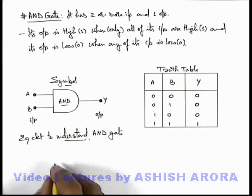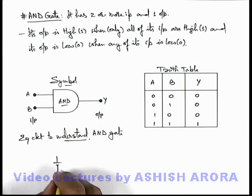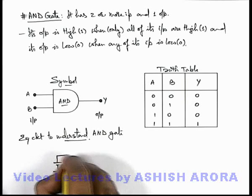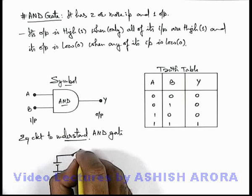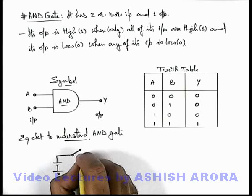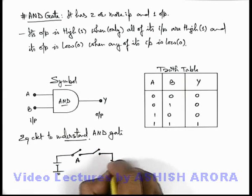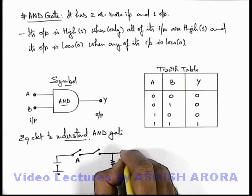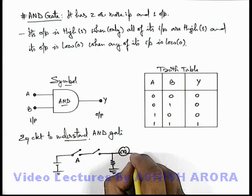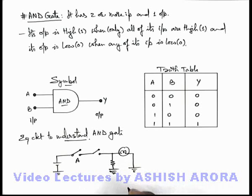And here we can consider a battery of which 1 terminal is connected to earth, and there are 2 switches A and B connected in series combination, and they are also connected to the resistance to the ground, along with a bulb connected to it, which is also connected to ground at the other side.